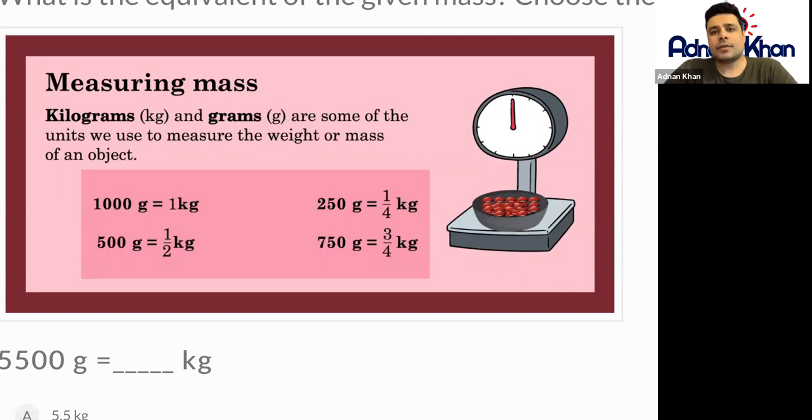So kilograms stand for kg and grams stand for g. We just shortened these long words just to make it easy for us to understand what they mean. So kilograms and grams are some of the units we use to measure the weight or mass of an object.